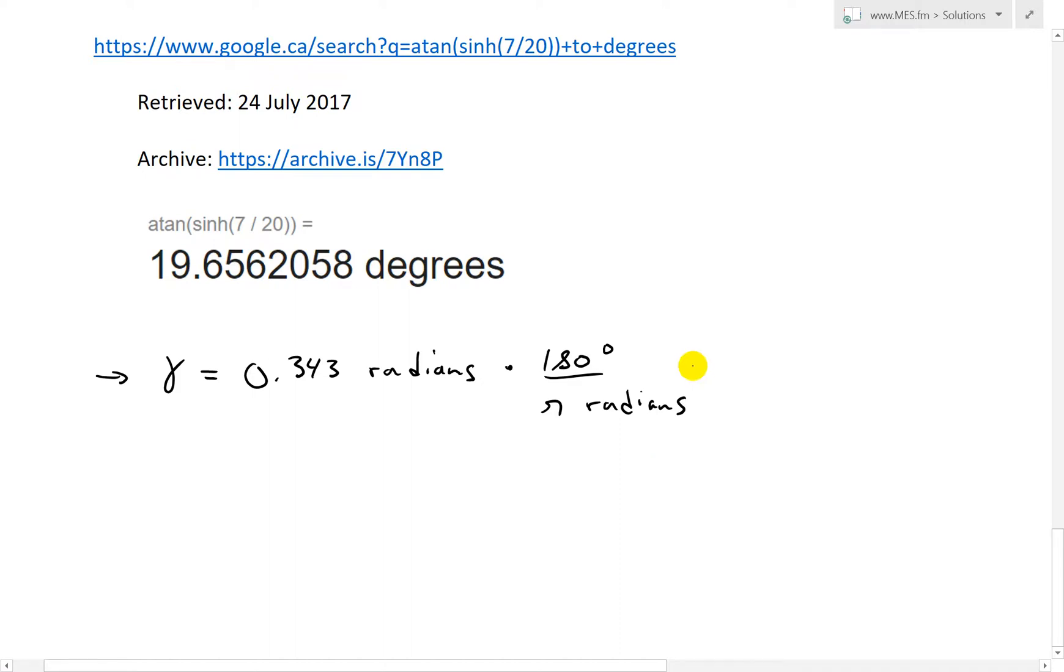Or you just write to degrees, and then you get equal to, and this one's actually roughly equal to, and then it's roughly equal to, because we're rounding up. Here, just write this as 19.66 degrees.